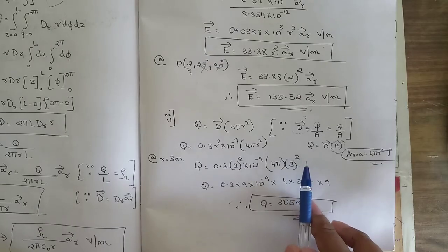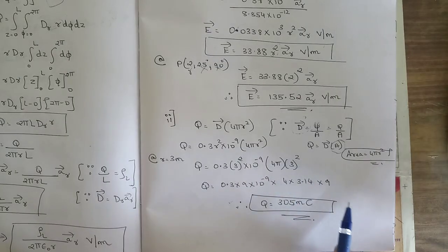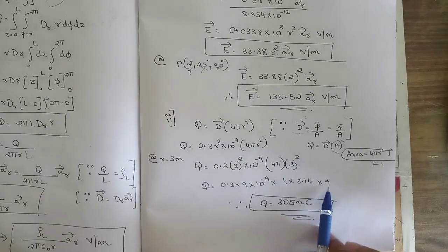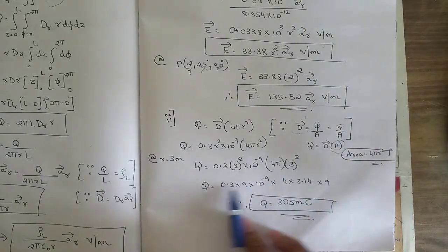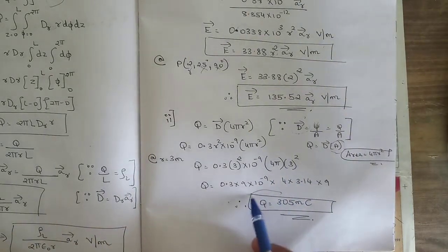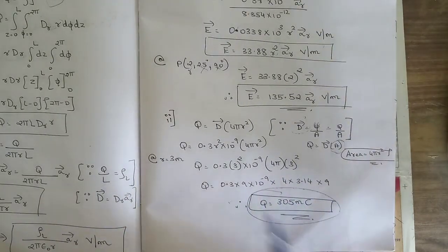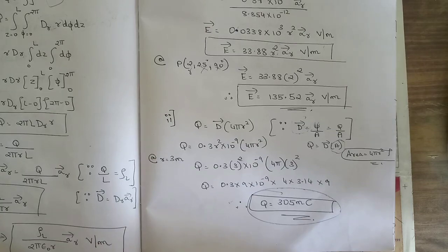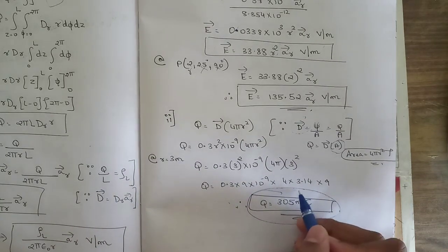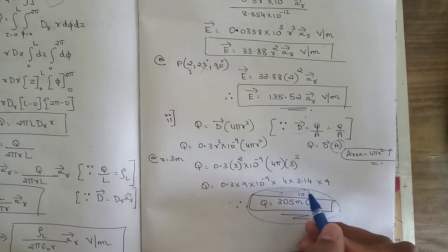With r = 3 meter, r² = 9. Substituting: Q = 0.3 × 9 × 10⁻⁹ × 4 × 3.14 × 9. Simplifying this gives the answer of 305 nano coulomb. Here 'n' denotes nano, whose value is 10⁻⁹.